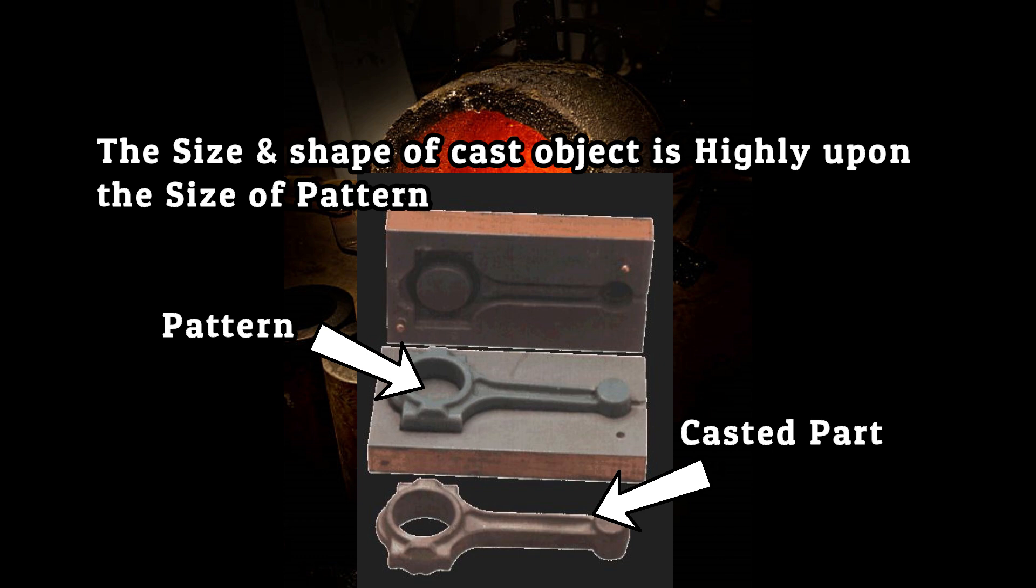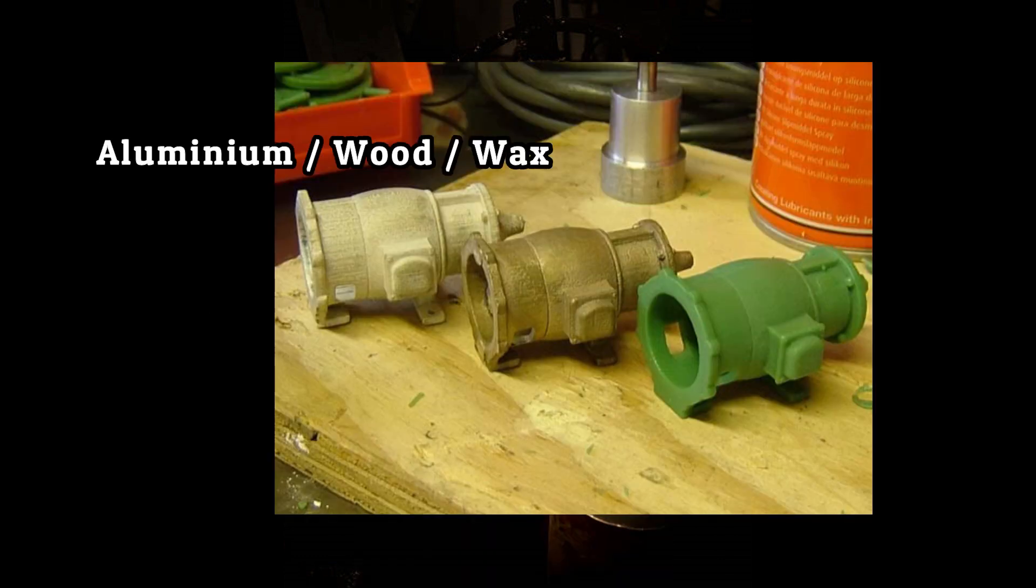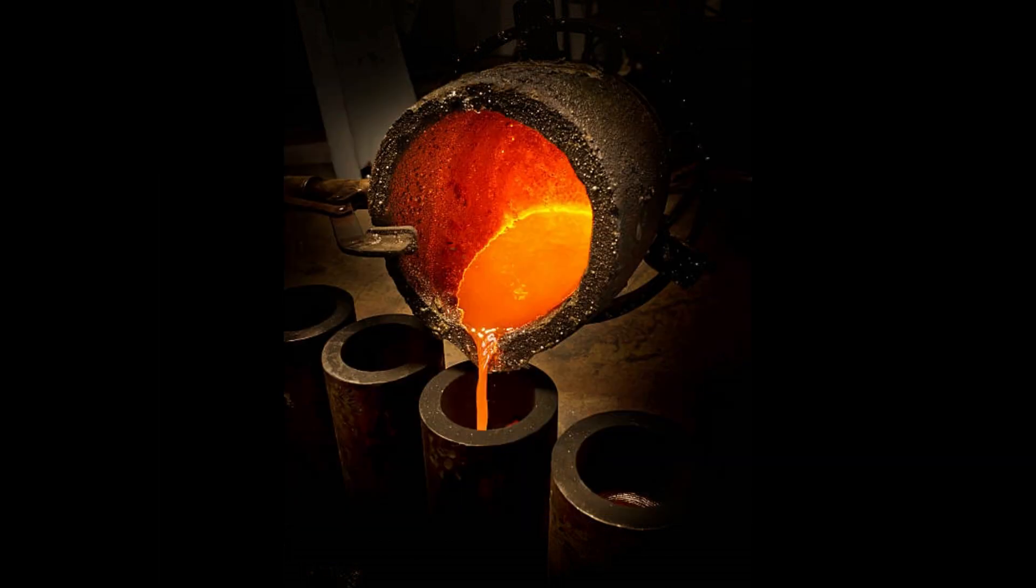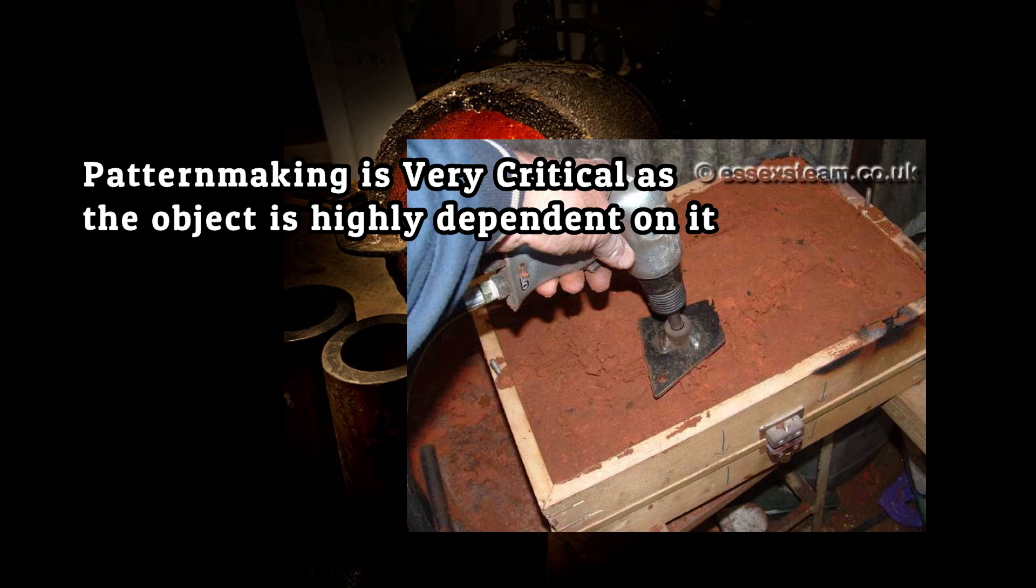The size and shape of the cast object is highly dependent on the shape and size of the pattern. Mostly patterns are made by aluminum, wood, wax, etc. Metal patterns are used for mass production. Pattern making is the most critical work in casting because the object is highly dependent on it.